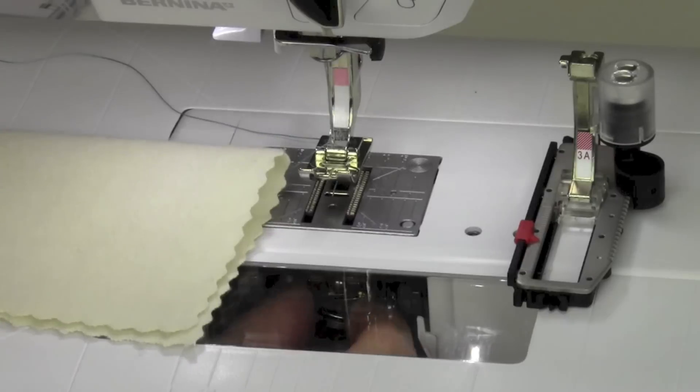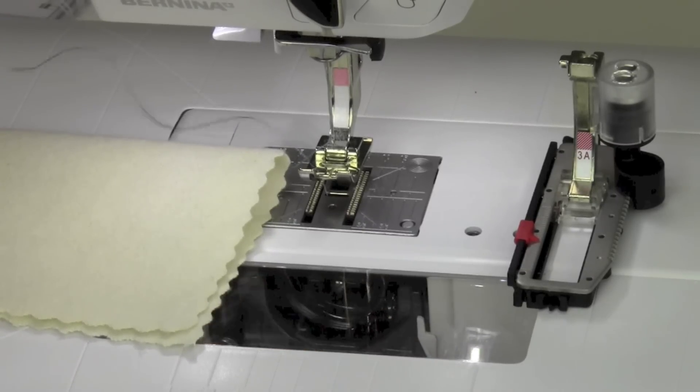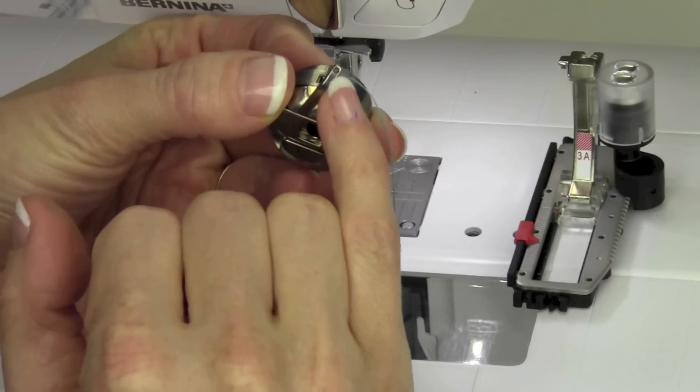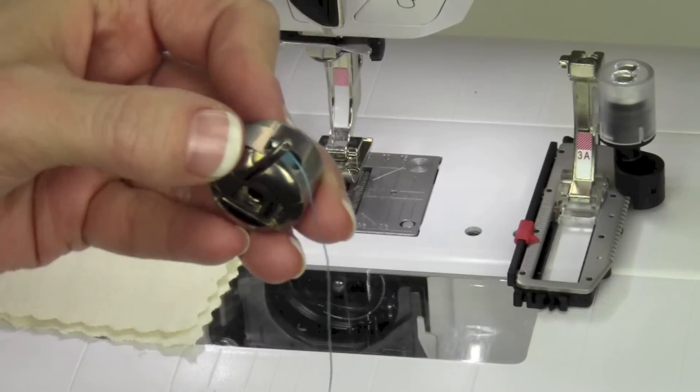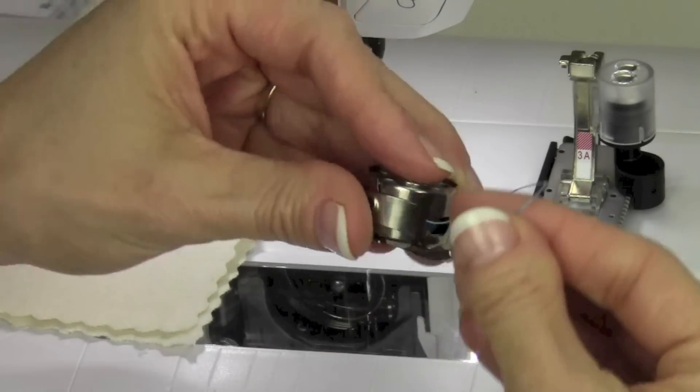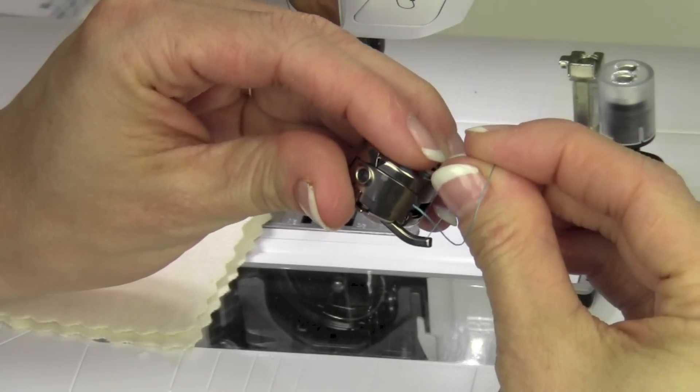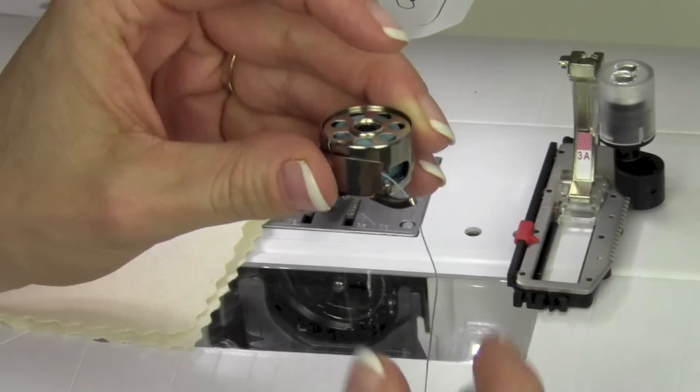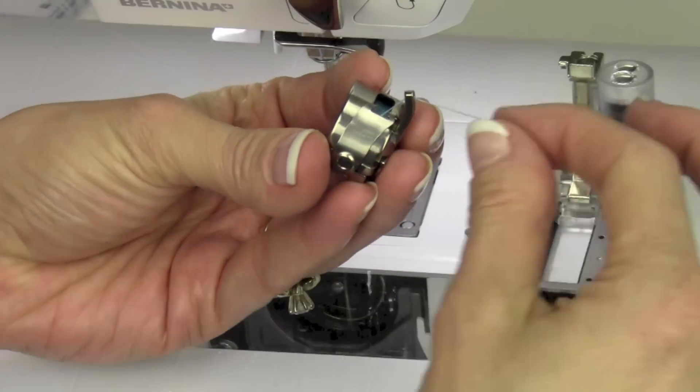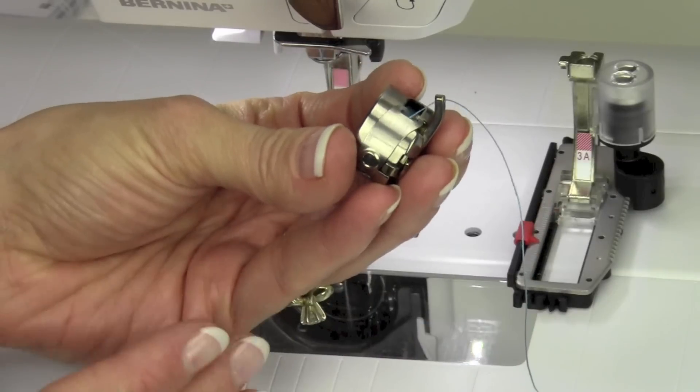First thing you're going to do is take out your bobbin case. You're going to notice you have a finger and there's a hole in it. We're going to take our thread and thread it through the finger. You kind of have to go up at an angle there and then just put the bobbin case back in the machine like this.